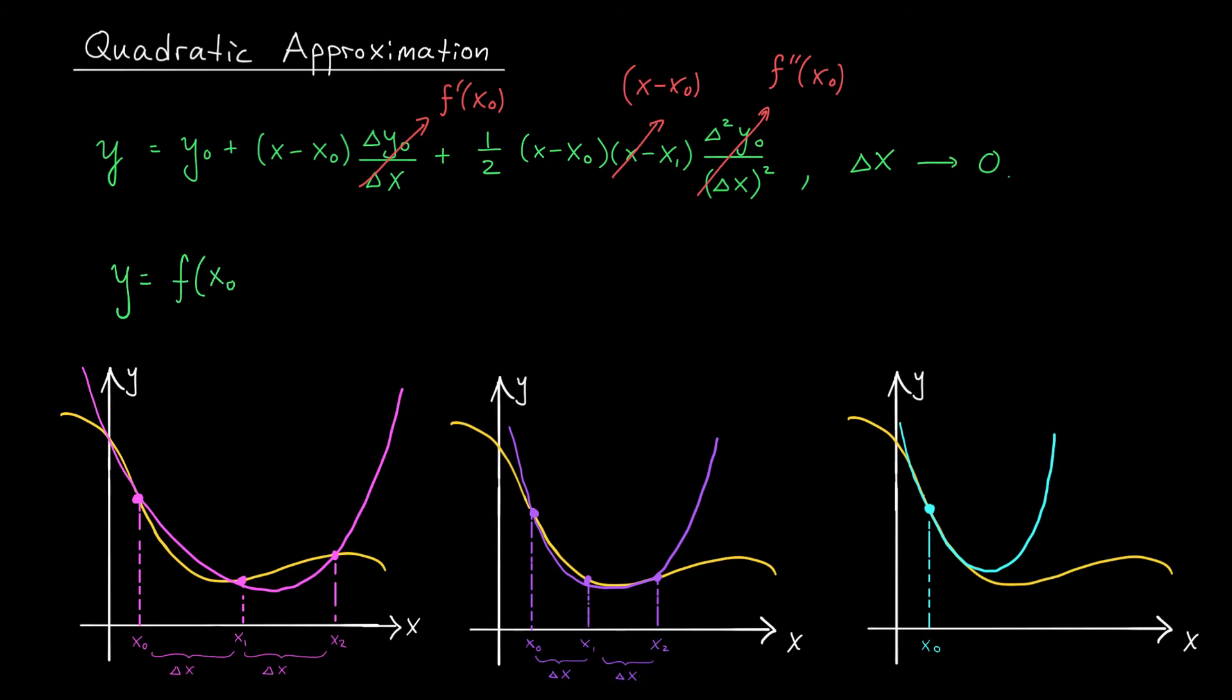But putting everything together, we now have an equation for our quadratic approximation. We get y equals y_0, which I'm going to write as f(x_0), plus my first derivative, f'(x_0), times (x - x_0). And then finally, my last term is the second derivative, f''(x_0), (x - x_0)², divided by two.